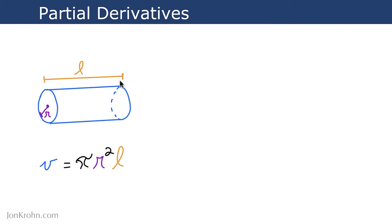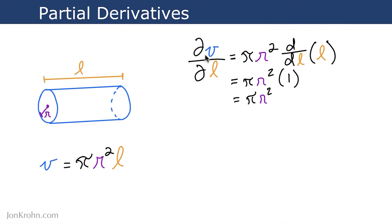We can calculate the partial derivatives of V with respect to r or with respect to l. For the partial derivative of volume with respect to length, ∂V/∂l, recall that we treat any variables not being differentiated with respect to as a constant. So if we're differentiating with respect to length, then pi and r squared are treated as constants. According to the constant product rule, also known as the constant multiple rule, everything constant can be left alone while we calculate the derivative of l.